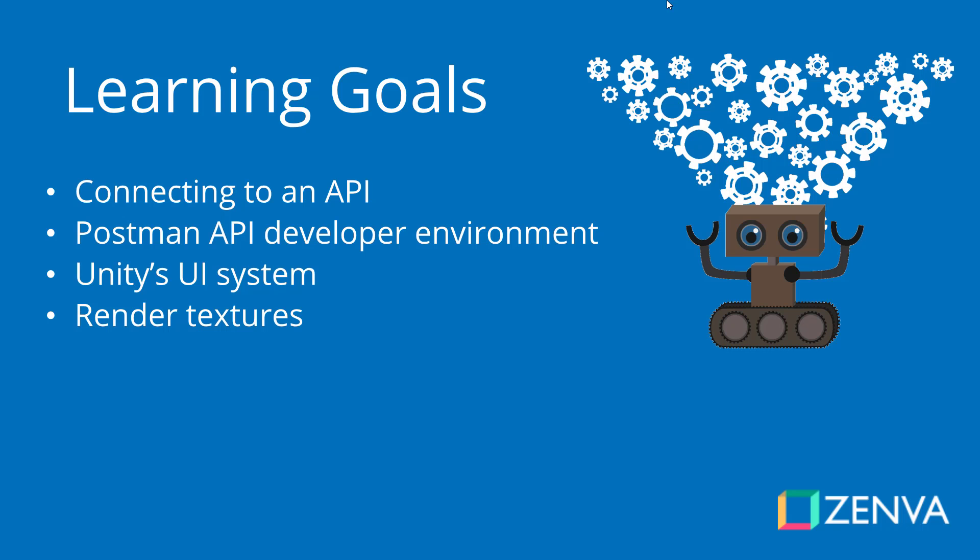So what are some of the things you'll be learning during this course? First of all, we're going to be learning about how to connect to an API. We're going to be using the Queensland government data sets to access their APIs, as they have a wide range of different information available. We'll be testing this out in Postman, which is an API development environment that you can download. You can easily enter in APIs, enter in parameters, and then get the resulting JSON files to easily test it out before hopping into Unity.